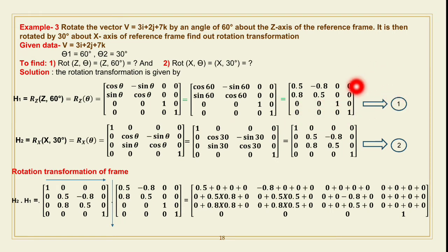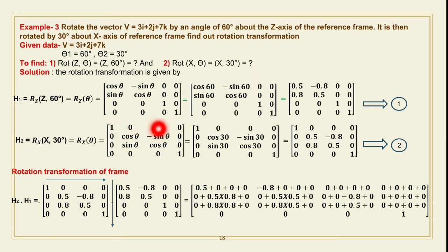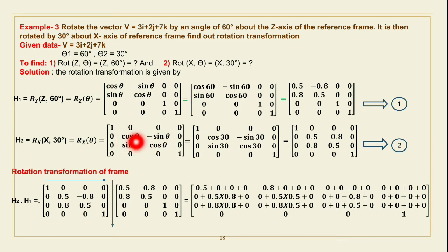Now find the second rotation — rotation about the X axis at 30 degrees. The general rotation matrix about the X axis is: [1, 0, 0, 0; 0, cos θ, −sin θ, 0; 0, sin θ, cos θ, 0; 0, 0, 0, 1]. For theta2 = 30 degrees, substitute cos30° and sin30° to obtain matrix H2.